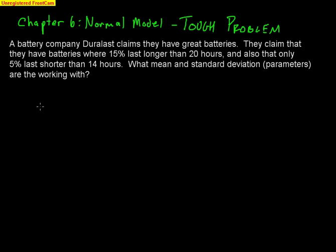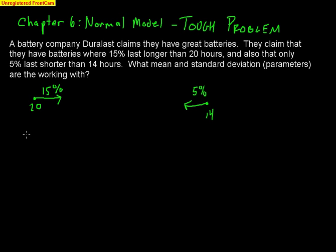They do give us two important pieces of information. The first one is that 15%. I like to draw pictures — I really think they help. 15% of batteries last longer than 20 hours, and they also tell us that only 5% of batteries last shorter than 14 hours. These numbers are important: 15% are over 20 (arrow going right), and 5% are underneath 14 (arrow going left). Now I'm going to use these two things to build some z-scores. My z-score formula is: value of interest minus the mean, divided by the standard deviation.